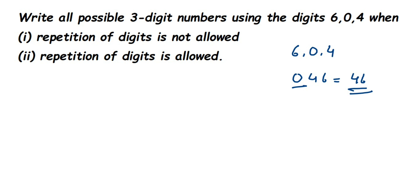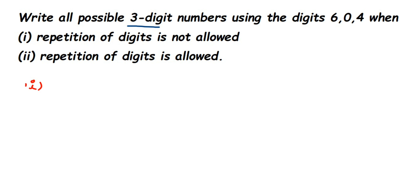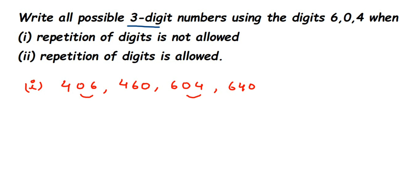First question: repetition of digits is not allowed. Starting with 4: we get 4-0-6, then interchange to get 4-6-0. Starting with 6: we get 6-0-4, then interchange to get 6-4-0. So only four combinations when repetition of digits is not allowed.